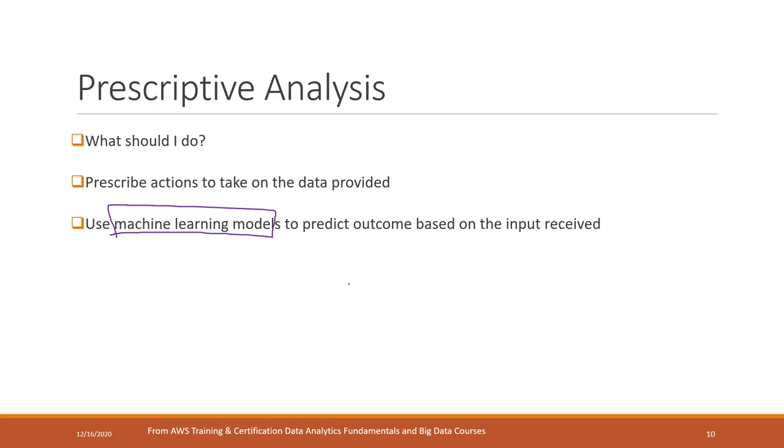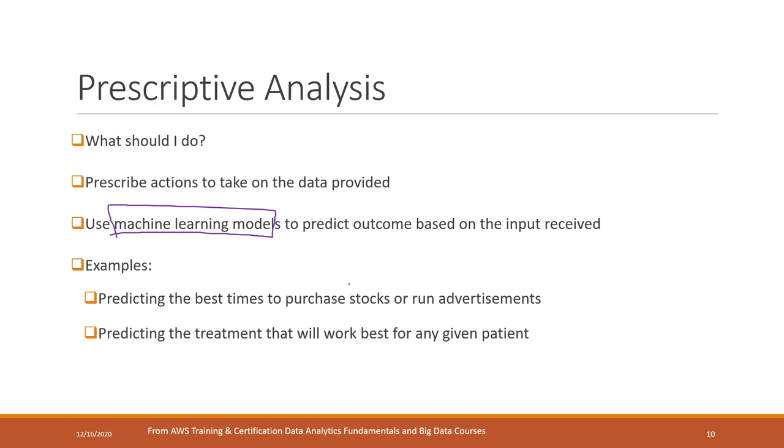The technologies behind such type analysis are using those machine learning models. If you're interested in machine learning and artificial intelligence, I also teach intro to machine learning and AI classes. Those machine learning models can help us to classify the data or can help us to make predictions based on the input data. Here are some examples like what are the best times to purchase a stock or to run those advertisements, and what are the treatments that will work best for any individual patient. Those are some examples of prescriptive analysis and those are powered by those machine learning models.